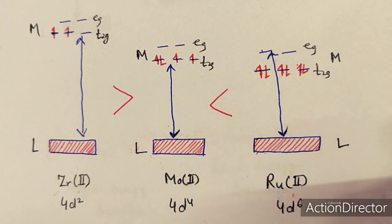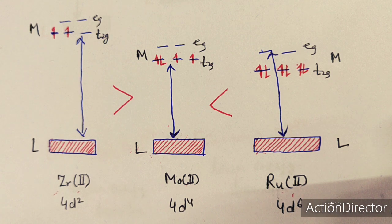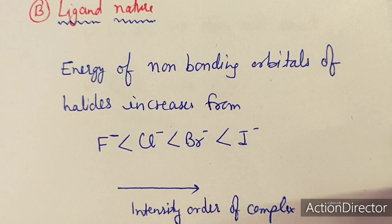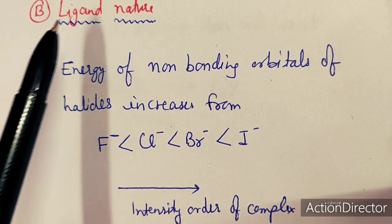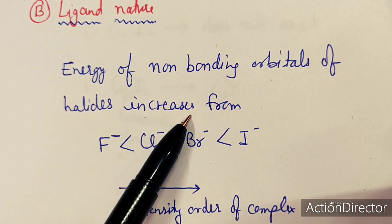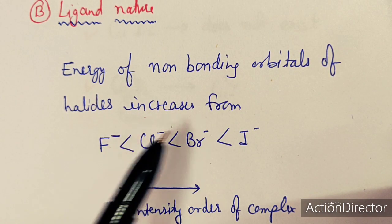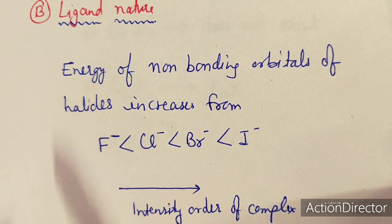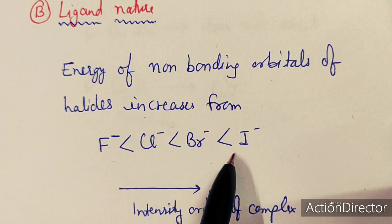These are the four metal-nature factors affecting charge transfer intensity. The second main factor is the nature of the ligand. The energy of non-bonding orbitals of halides increases from F⁻ to I⁻, so the intensity order of complexes follows: complexes with I⁻ ligand are more intense than those with F⁻ ligands.